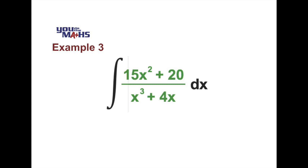And there's a couple of triggers like we mentioned earlier. You'll notice that the expression in the bottom line, x cubed plus 4x, all of that is raised to the power 1. So that suggests it's possibly going to be a log solution. The numerator is not the derivative of that expression in the bottom, because the derivative of the denominator is 3x squared plus 4.